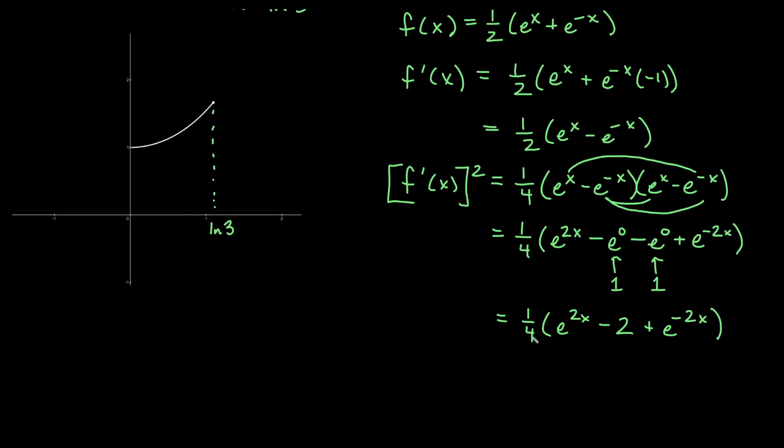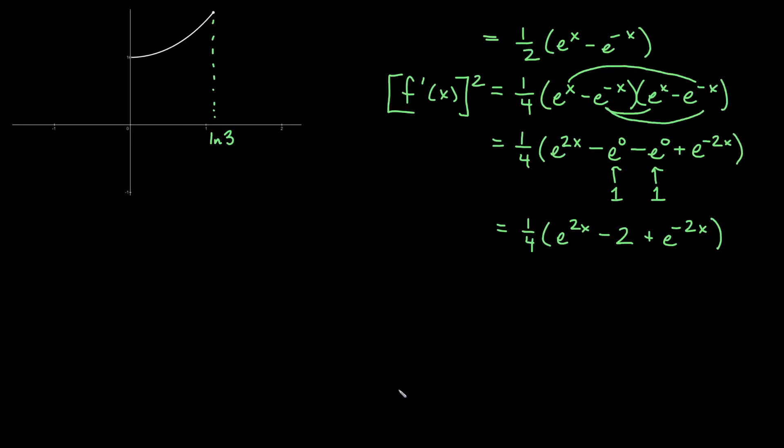Okay, and I'm just going to do this because of what's coming up. So I'll have e to the 2x minus 2 plus e to the negative 2x. And we're going to have all of that over 4. So that's my f prime squared. So let me go ahead and go back to this.